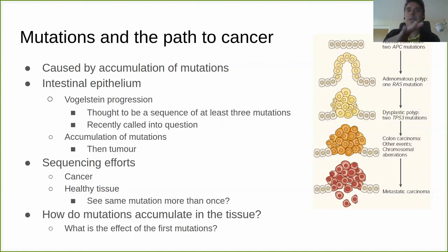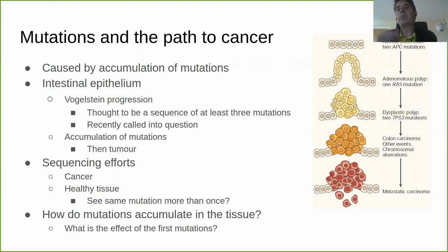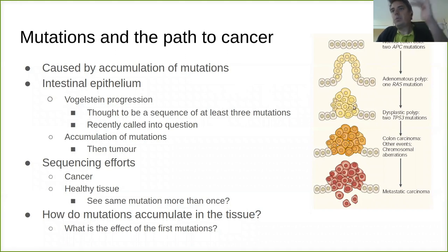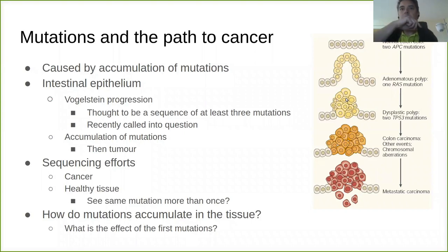If we look specifically at the intestinal epithelium, there's a very famous seminal study by Vogelstein where he described what's now called the Vogelstein progression. The idea is you have the normal epithelium, you get two hits in the APC gene — you mutate both copies of APC — and you end up with an adenoma. Then you get mutations in RAS and P53, taking you through a progression from adenoma to full-blown metastatic colorectal cancer.